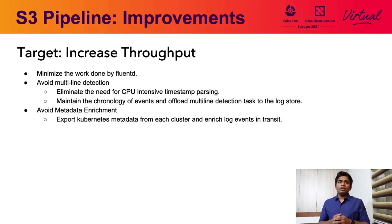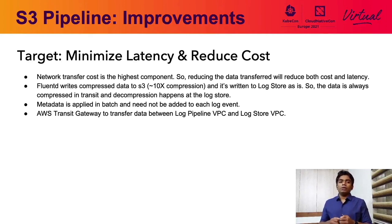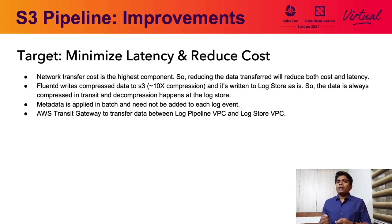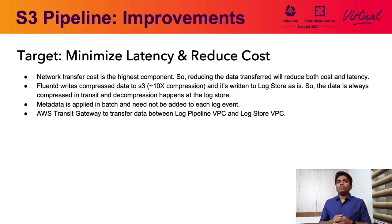When looking at the cost breakdown for the pipeline, we found that the data transfer cost was the highest component, higher than even compute and storage. So if we can reduce the amount of data sent over and use a more cost-effective way to transfer it, we can make huge savings. One added benefit is that as we reduce the amount of data transfer, the latency also goes down. Fluentd compresses the data via GZIP in the buffer when it's flushed to an S3 object. In our normal log load, we were getting around 10 times compression. This GZIP file is then returned to the log store as-is, meaning the log data stays compressed from the moment it leaves the clusters until it reaches the log store.